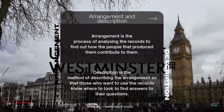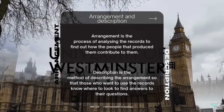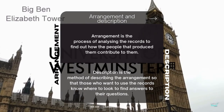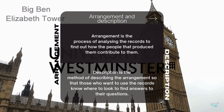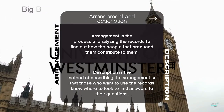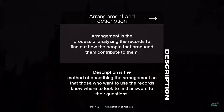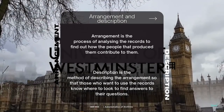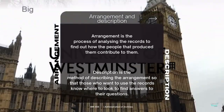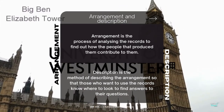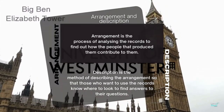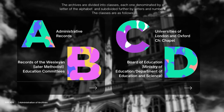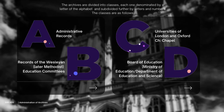The following covers arrangement and description. Arrangement is the process of analyzing the records to find out how the people that produced them contributed to them. Description is the method of describing the arrangement so that those who want to use the records know where to look to find the answers to their questions. The archives have been divided into specific classes.